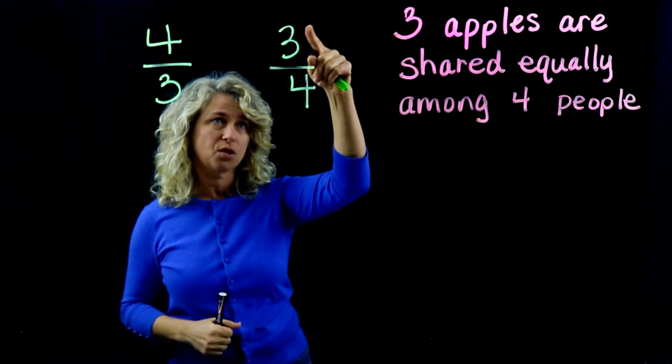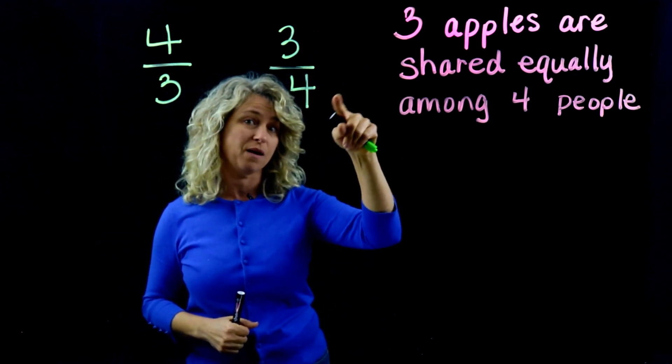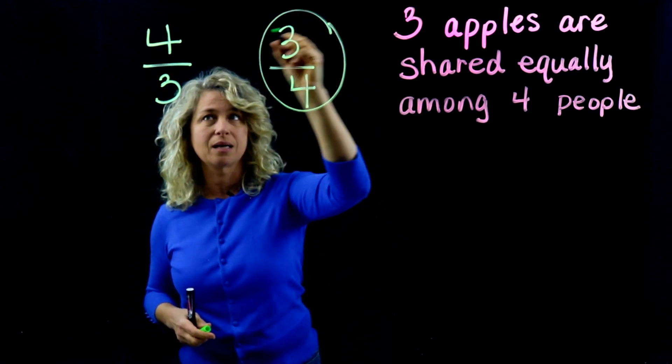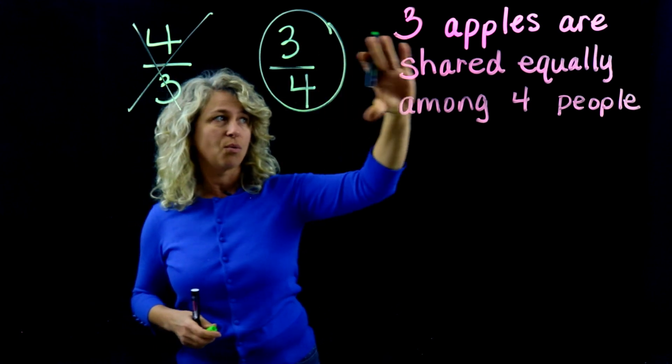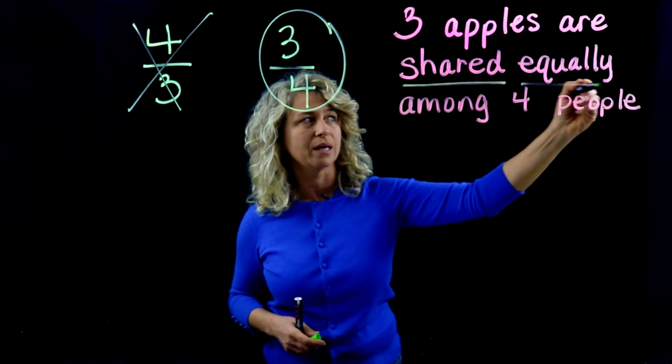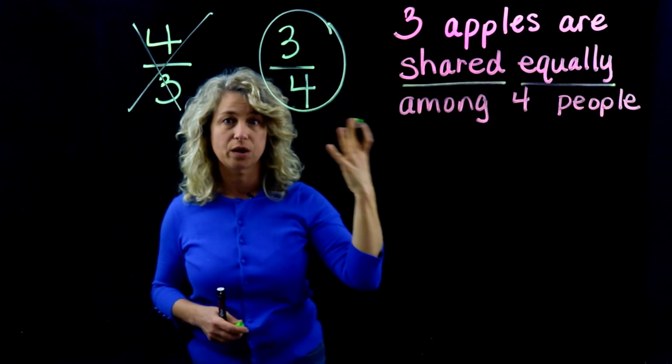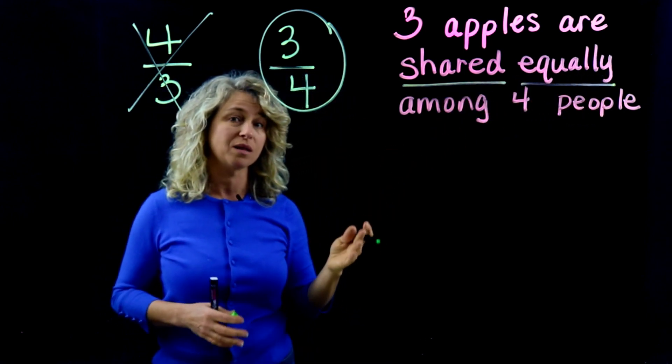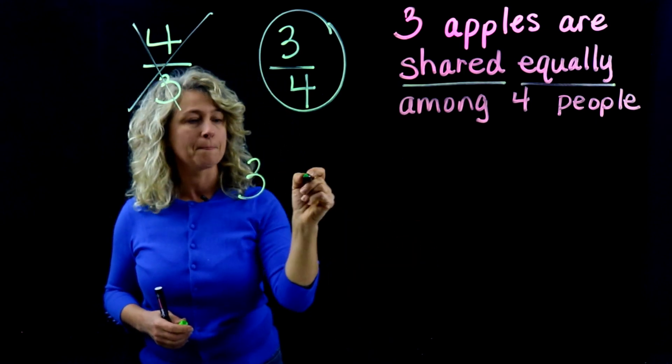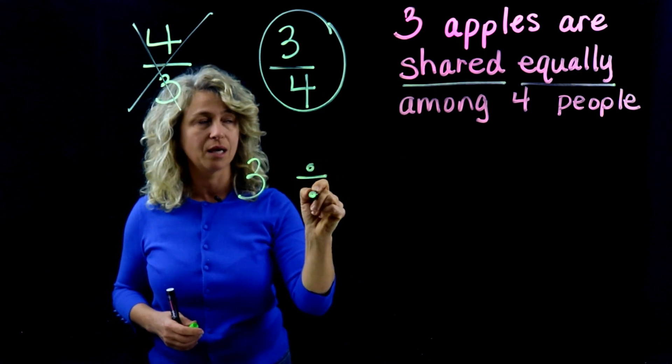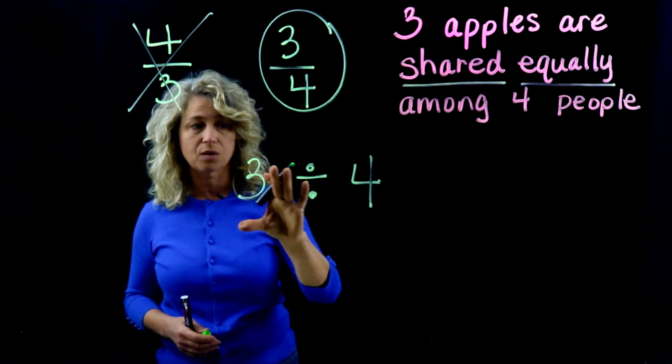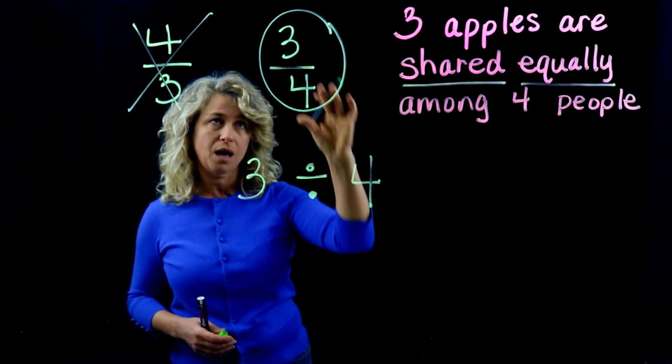Look at this option: three apples are shared equally among four people. Correct! All right, so this is your correct way to write this problem. Do you see these words right here, 'shared equally'? I hope that these are clue words and this triggers your memory that this is actually division. Three apples shared equally among four people can be written also as division: three divided by four. And three-fourths means three divided by four.